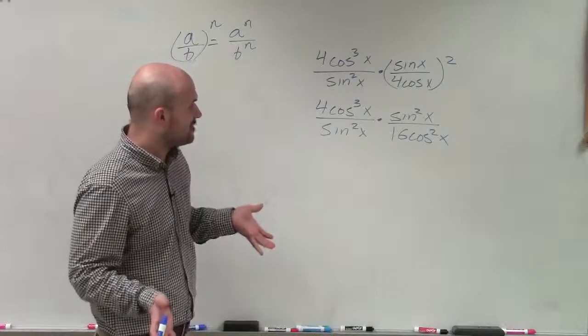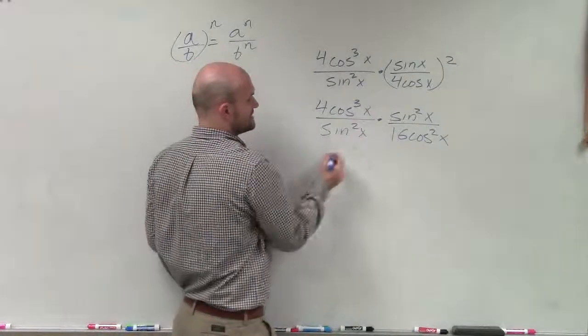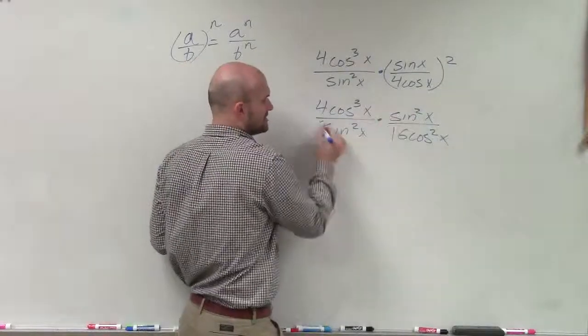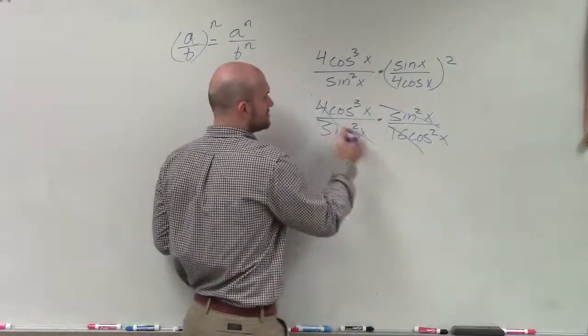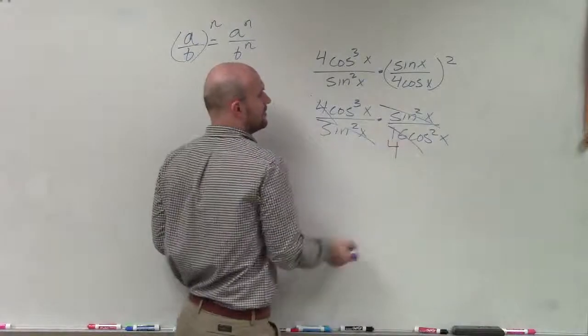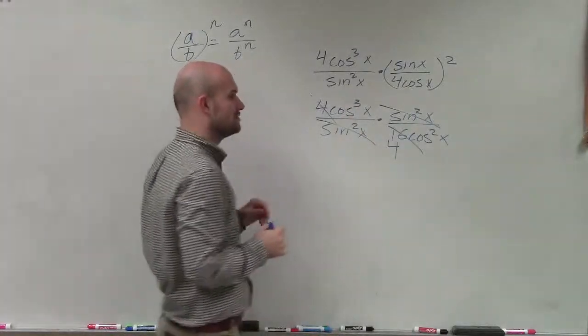So now you can see that if I'm going to be multiplying these, I can see that these sine squareds across here, those are going to divide into 1. This 4 divided by 16 is going to be left with 1 fourth. And then we'll have cosine cubed divided by cosine squared.